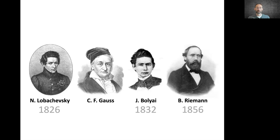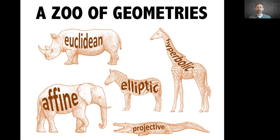This very quickly created an entire zoo of different geometries. Towards the end of the century, questions such as which geometry is more general and what actually defines a geometry were asked.